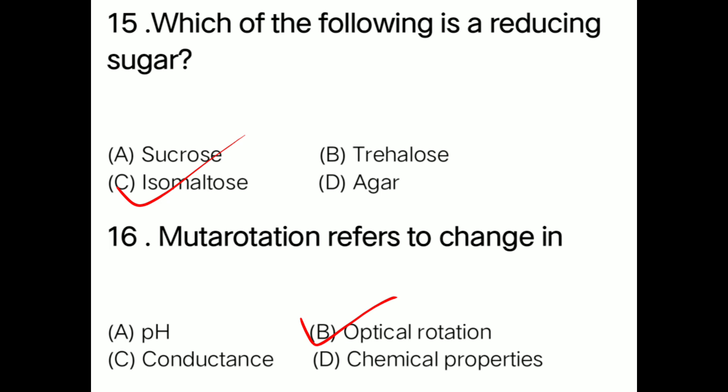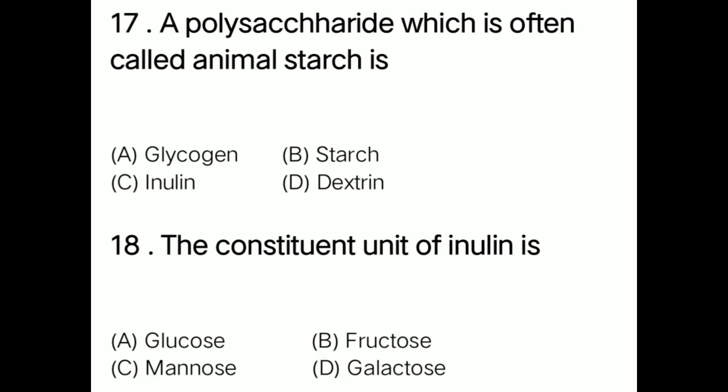Question: A polysaccharide which is often called as animal starch is option A glycogen, option B starch, option C inulin, option D dextrin. Correct answer is option D: dextrin. The polysaccharide often called animal starch is dextrin.